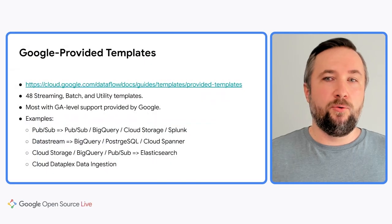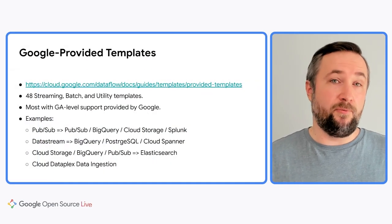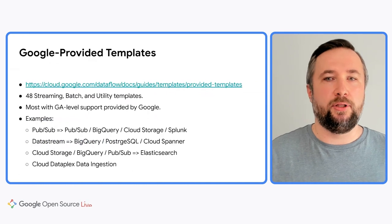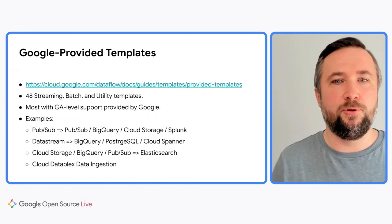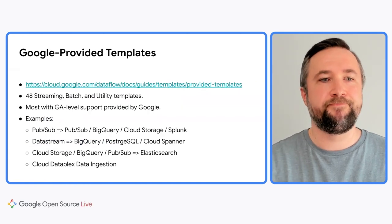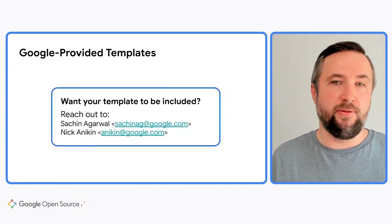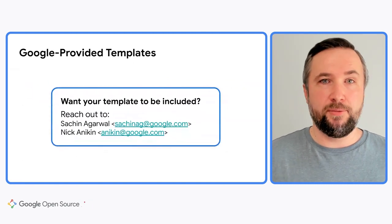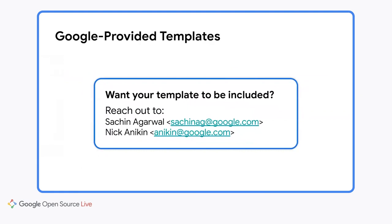Templates in this repository can be provided by different parties. If you visit the link, you will find the list of those provided by Google. Google provides GA-level support for these templates, and you can also run them directly from a drop-down list in the user interface of Cloud Console, which makes it very easy for users to discover and try these data transformations. If you want to not only share your template in the GitHub repository but also make it discoverable and include it in the list of Google-provided templates, that's also possible. Please reach out to the people listed on this slide and we can make it happen.